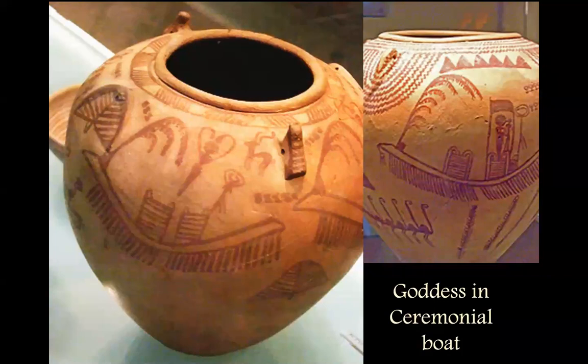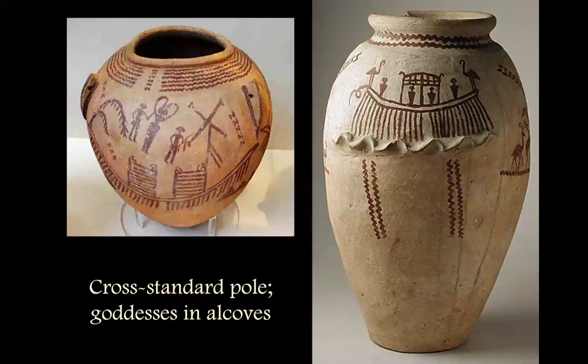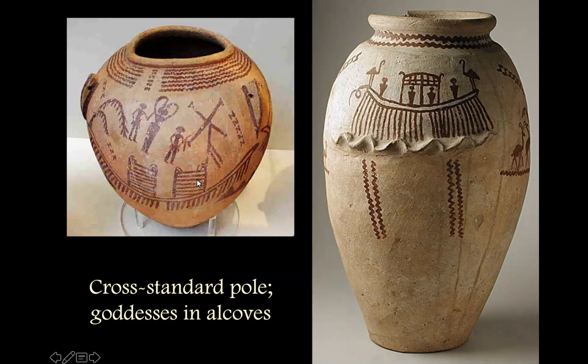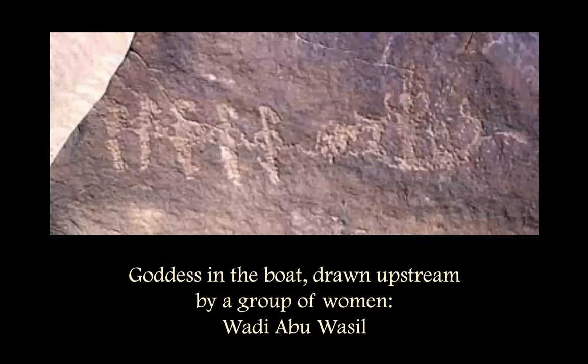These figures are in alcoves, as if they're in shrines on the boat. Note also that the front and back have flamingos standing there, and various kinds of ceremonial standards are attached to the cabins. When I say goddesses here, 'sacred women' might be a better term, because it could be a goddess, a priestess, medicine woman, or ancestor. There are a lot of possibilities since there are no written sources — we're going only by the iconography.